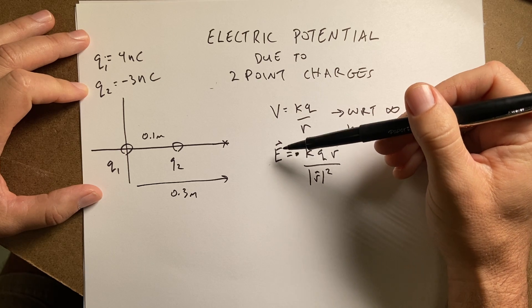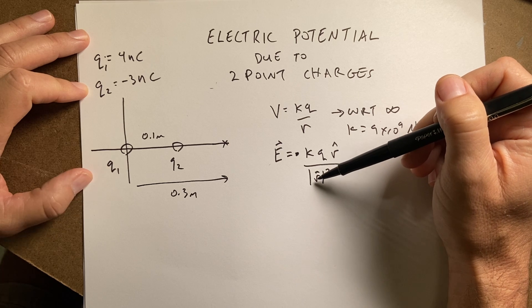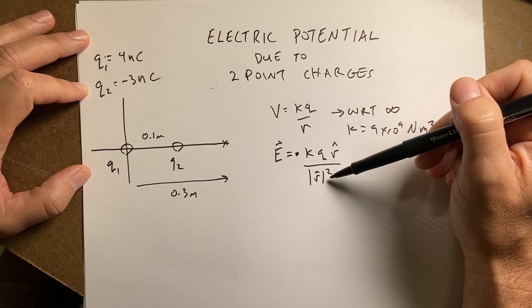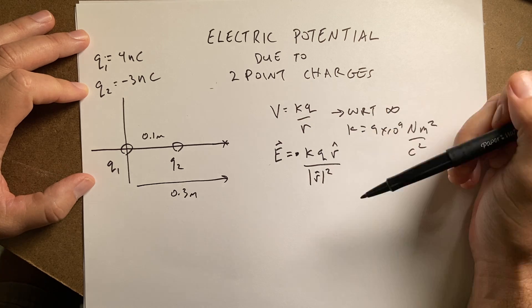One, electric field is a vector. Electric potential is not. It's a scalar. Two, this depends on the square of the distance between the point charge and the location you're trying to find, and that just depends on the distance. Okay, so this isn't too bad.